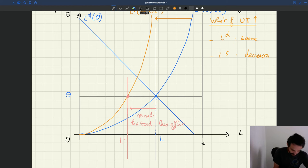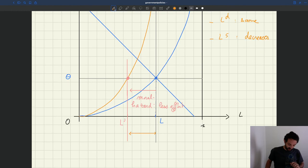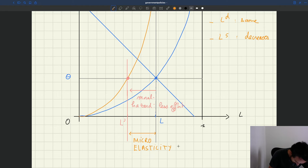So this gap between L and L prime, I don't have too much space so I'm putting it here, is often called the micro-elasticity of unemployment with respect to UI.